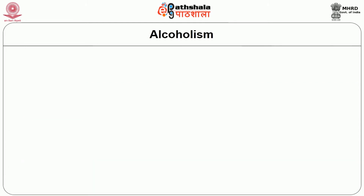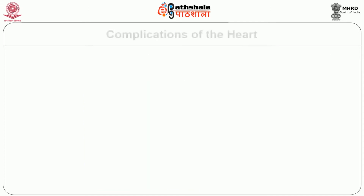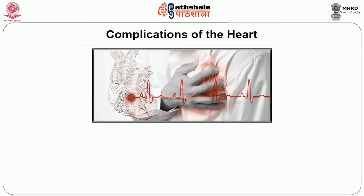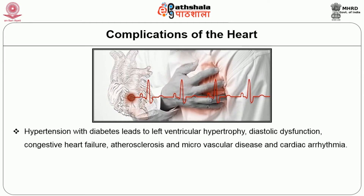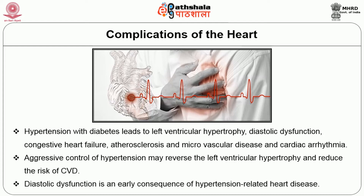Now let us move on to the clinical outcomes of diabetes with hypertension. Hypertension with diabetes mellitus is a strong risk factor for all clinical manifestations of atherosclerosis, heart failure, and peripheral arterial disease. The complications of the heart commonly seen include left ventricular hypertrophy, diastolic dysfunction, congestive heart failure, atherosclerosis, microvascular disease, and cardiac arrhythmia. Aggressive control of hypertension may reverse left ventricular hypertrophy and reduce the risk of cardiovascular diseases.